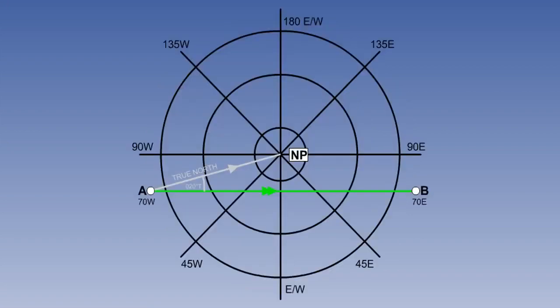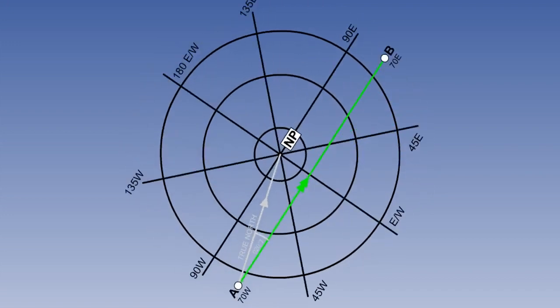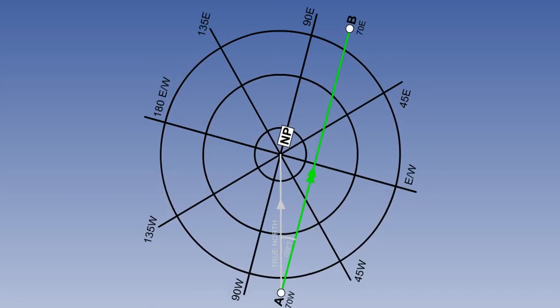Here is the same situation on a polar stereographic chart. Position A is at 70 west. The line defining true north is the line joining it to the north pole, that is, the meridian of 70 west. The track from A to B makes an initial track angle of 090 degrees true at A.